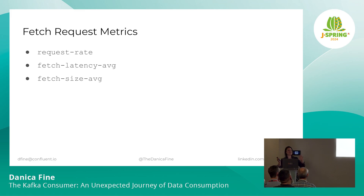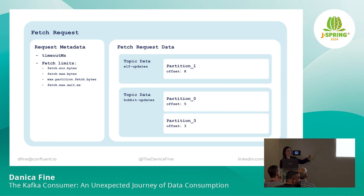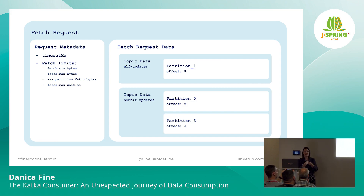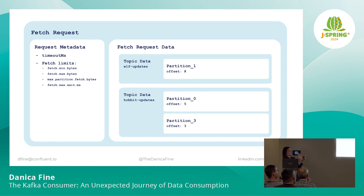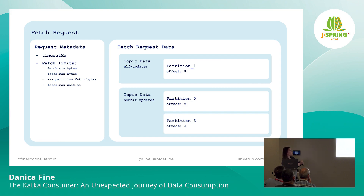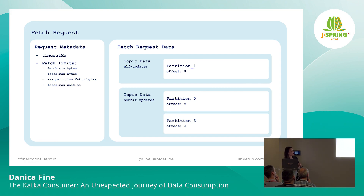This is effectively what we're sending along to the broker: we have our partition assignment, we know our offsets that we're going to be reading from, and this is what every fetch request from consumer zero is effectively going to look like. Each request has some metadata associated with it — mostly related to those timeouts and limits we just saw. We have the timeout that the request is abiding by, the fetch limits min and max, the partition maxes, and how long we're going to wait to block for that fetch. Note that each request is being sent to a single node or broker — both of our assigned partitions, zero and three, conveniently live on the same broker.